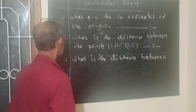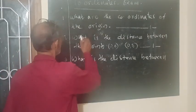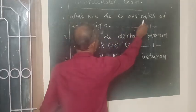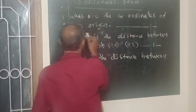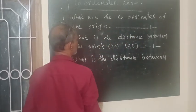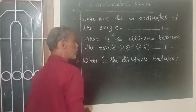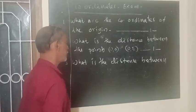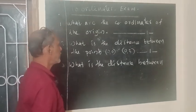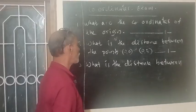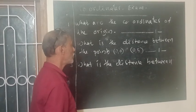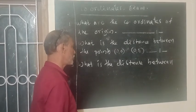Question number 1. What are the coordinates of the origin? The coordinates of the origin are (0, 0). Question number 2: What is the distance between the points (0, 0) and (0, 5)?